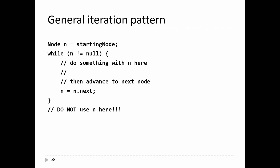The pattern for iterating over linked nodes: make a node variable n starting at the top node. As long as n is not null, do whatever you want with node n inside the loop. At the end of the loop, set n = n.next to move to the next node. Be careful: when you exit the loop, n is null — don't try to use n after the loop or you'll get a null pointer exception. So start at the top node, check not null, do something, follow the next link, and repeat until null.